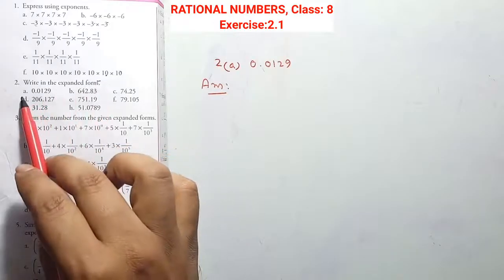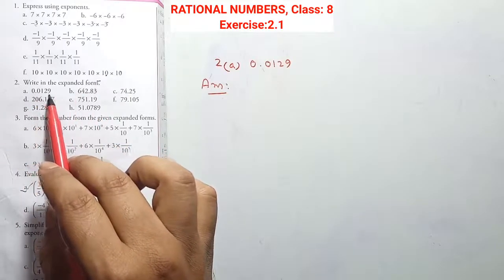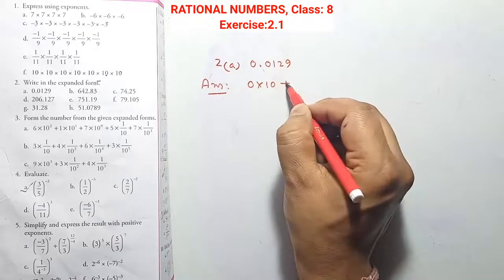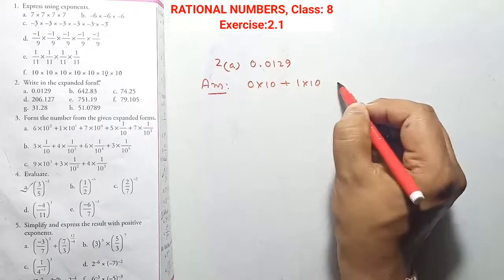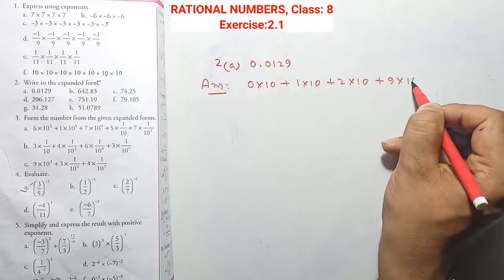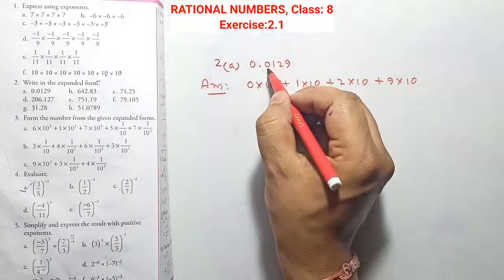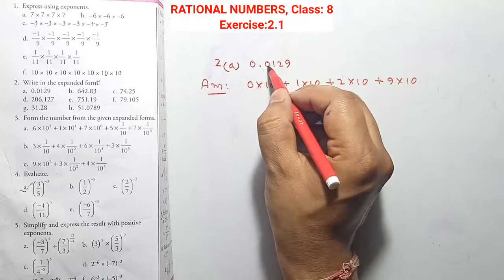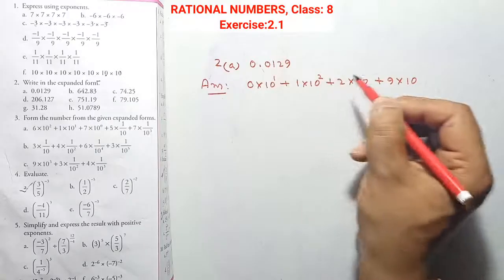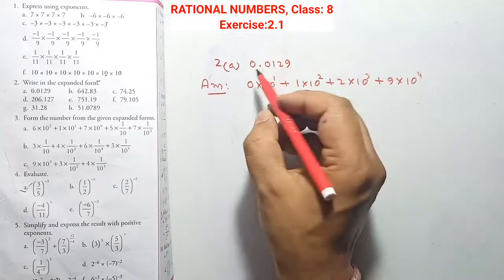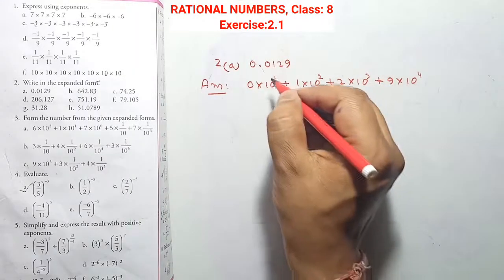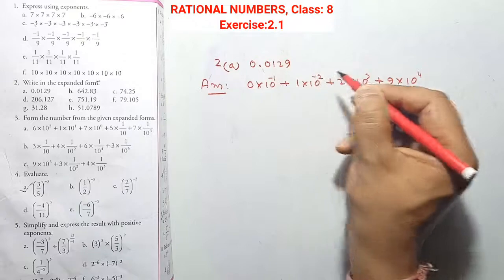Question 2: Write the expanded form. Question A: 0.0129. This is easy. It will be 0 into 10 + 1 into 10 + 2 into 10 + 9 into 10 with appropriate power positions. Every decimal part always carries a negative sign — we will always use the negative sign to write the expanded form.